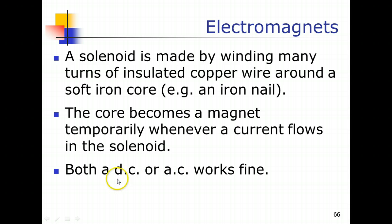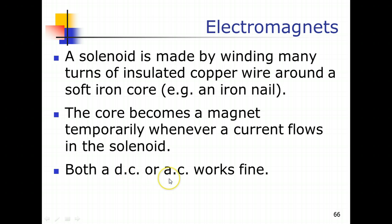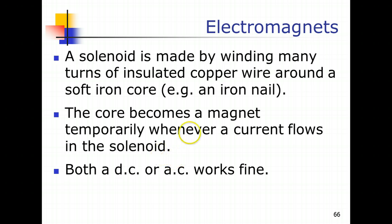In most cases, electromagnets prefer a direct current source like batteries or dry cells. AC can also be used. A high-frequency alternating current works almost similar to a direct current supply. However, a low-frequency alternating current will cause the magnetism to appear and disappear around the iron core, though there are some applications which require low-frequency AC.